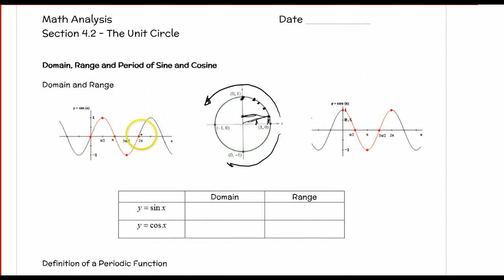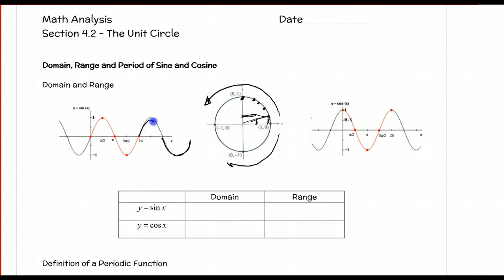If we just kept drawing a little bit further, we'd have a second period — you can see it looks exactly the same as the red portion.